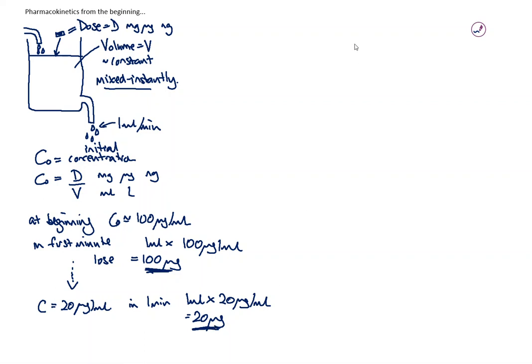If we sketch a graph, we're starting off at C naught. The concentration is dropping fairly rapidly to start with, but then as the concentration is lower, we're losing it more slowly. This is actually exponential decay.